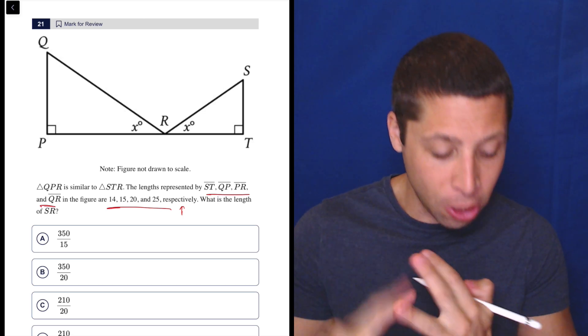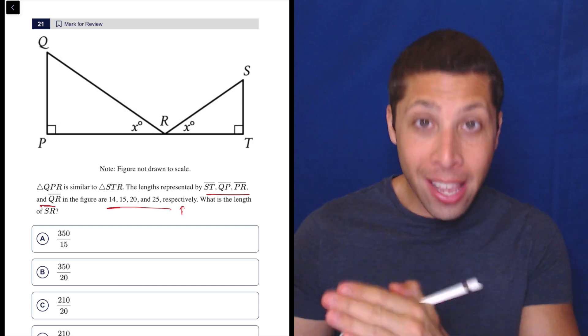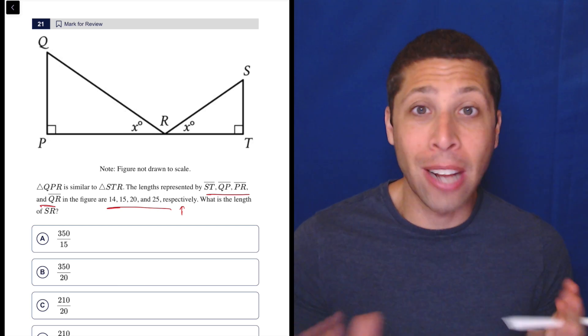So the order of ST, QP, PR, QR is the same order as 14, 15, 20, 25. So we're just going to match them up, the first with the first.